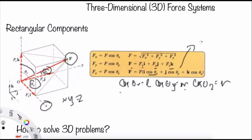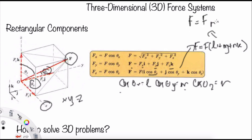So we can rewrite the equation as F equal to F times (l·i plus m·j plus n·k). In the simplest form, we can write F equal to F times nF, where nF is the unit vector representing the direction of the force.